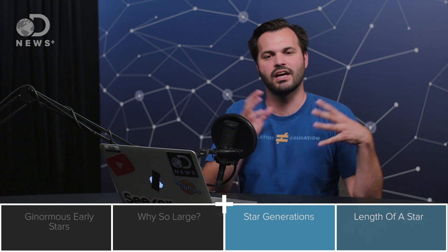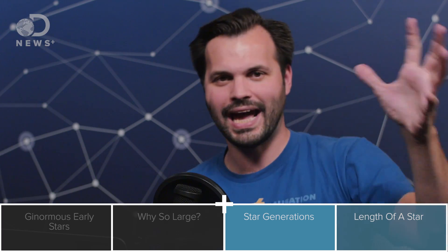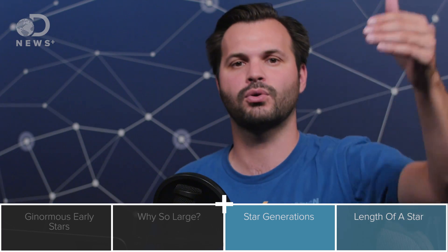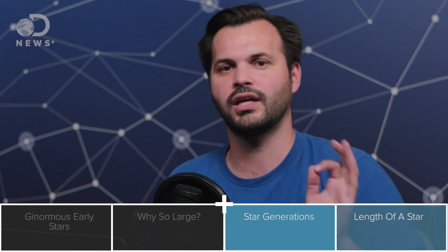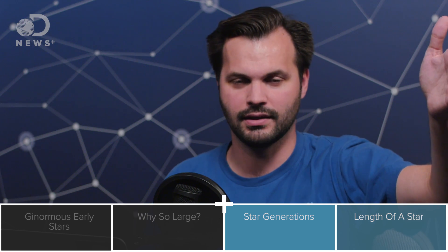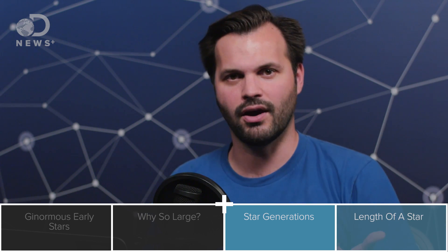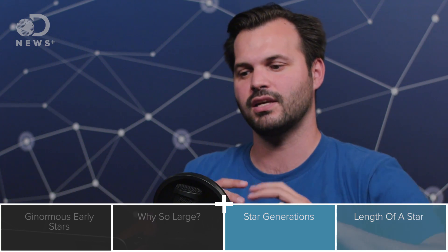We would only be able to see what's left over from population three stars' deaths if we look way out into the universe. Because the further away you look, the further back in time you're looking, because speed of light is constant. So if you're looking at a star that's so many light years away, say 10 billion light years away, the light is just getting to you now, but it was emitted from that star 10 billion years ago. So that's why they say they're looking back in time the further away they look.